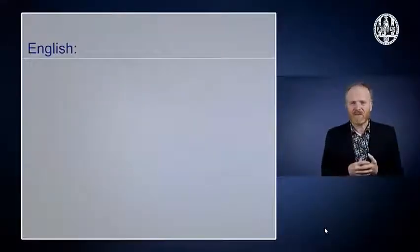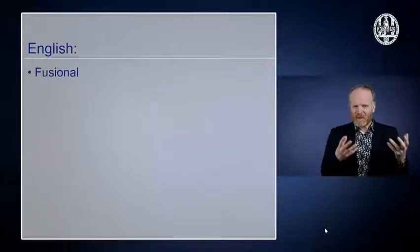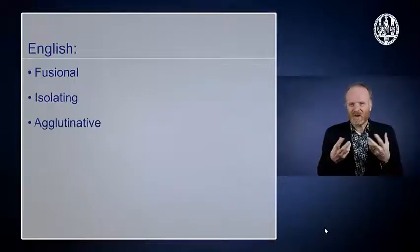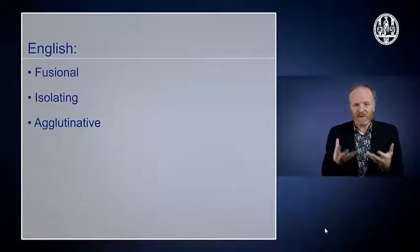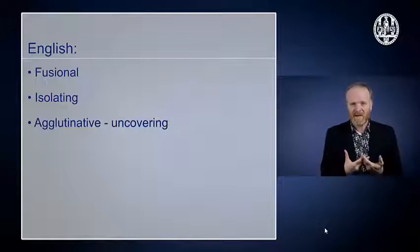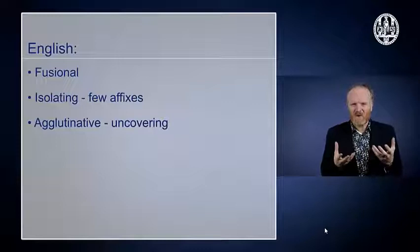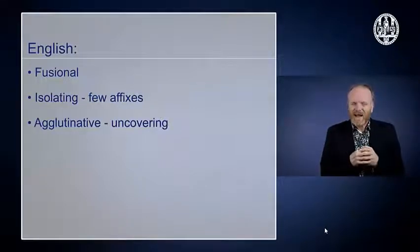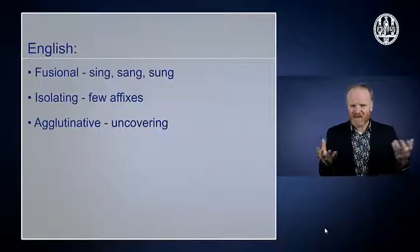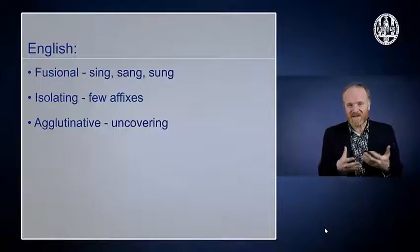Now, it would obviously be great if we could subdivide all languages in the world easily into these classes. But usually it's not that easy. English, for example, seems to be somewhere in between fusional and isolating languages. And actually also something of an agglutinative language. It's a bit agglutinative. We have seen that it has words like uncovering. So it has prefixes, suffixes, it has affixes. But it doesn't have very many and in that respect it's also isolating. And it's even a little bit fusional because it has words like sing, sang, sung. We change the time and we change the vowel, just like in Arabic.